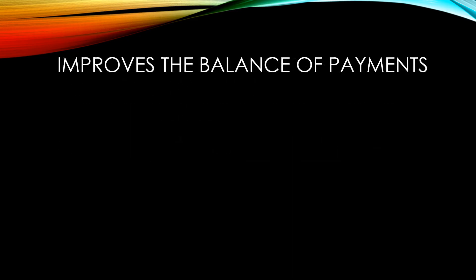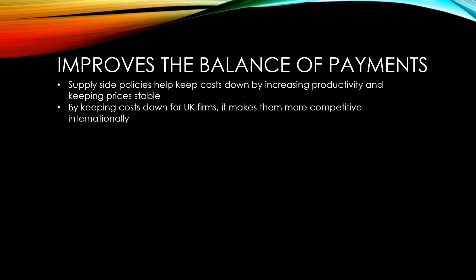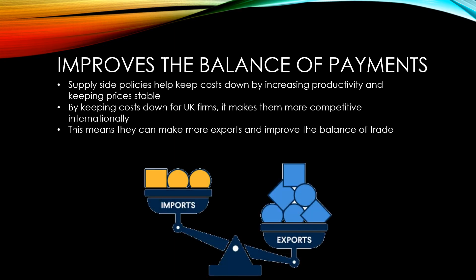Supply side policies help keep costs down by increasing productivity and keeping prices stable. By keeping costs down for UK firms, it makes them more competitive internationally. This means they can make more exports and improve the balance of trade, which is the difference between our net exports and net imports. The balance of trade is the core component in the balance of payments, which we'll be looking at in a later unit.